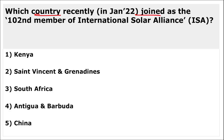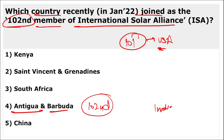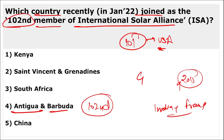Antigua and Barbuda joined as the 102nd member of the International Solar Alliance. The 101st member was the United States of America. The International Solar Alliance is a joint effort of India and France, started in 2015, and its headquarters is in Gurugram, Haryana.